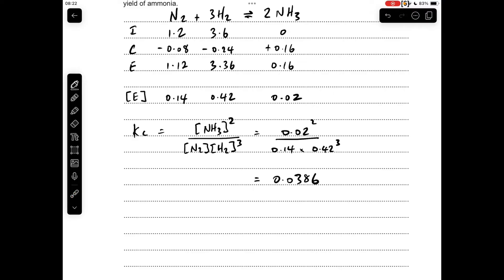Next we need to calculate the units. We've got moles per decimeter cubed squared on the top, moles per decimeter cubed to the power of 4 on the bottom. That will cancel down to 1 over moles per decimeter cubed squared. Taking that onto the top gives units of dm to the 6, moles to the minus 2.